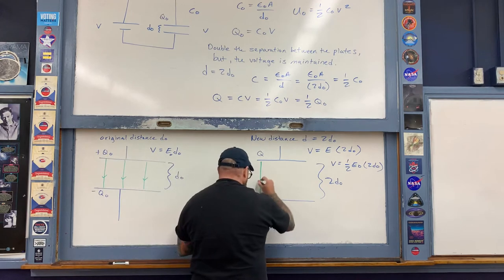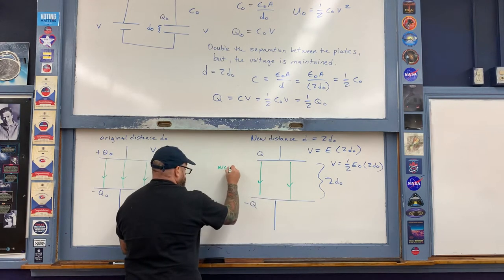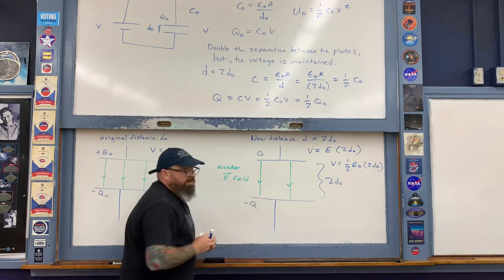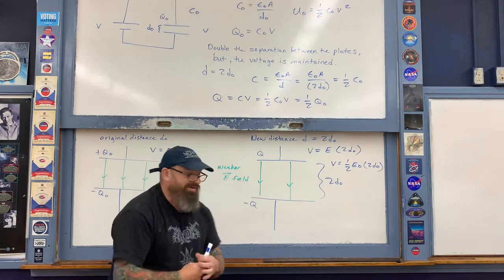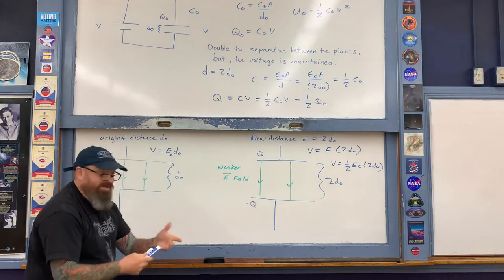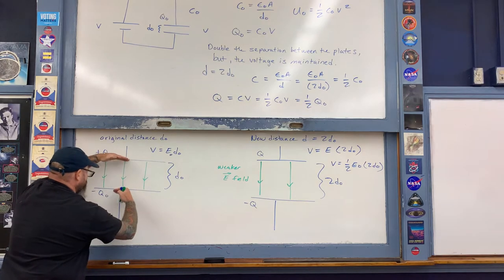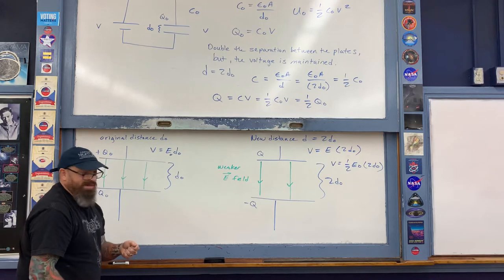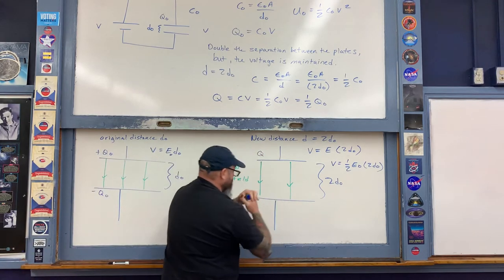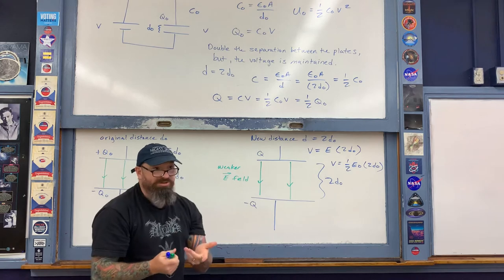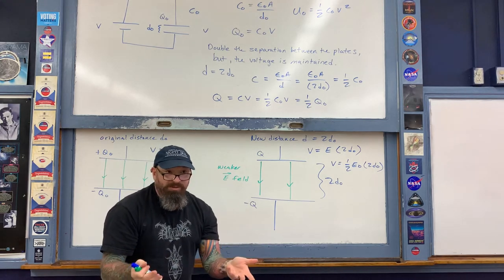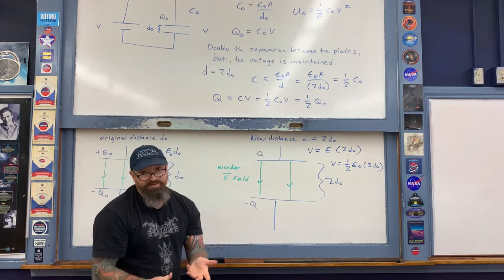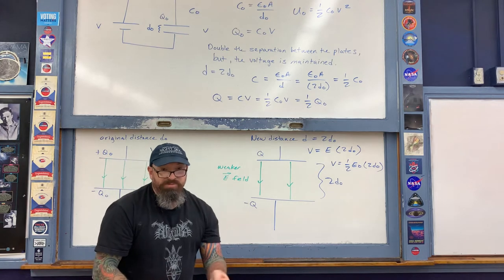Think of it mechanically in terms of gravity: two plates separated by 10 feet with an original gravity field, then we double the separation to 20 feet. To maintain the same voltage, the gravity field has to be weaker — that's essentially what's described in part A.